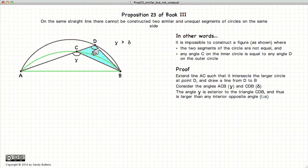Now if gamma is larger than delta, they cannot both be equal, because they cannot be both larger than and equal to simultaneously. So if the angles at C and D are not equal to each other, these two circle segments are not similar.